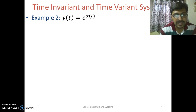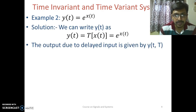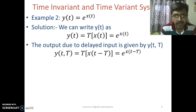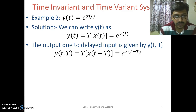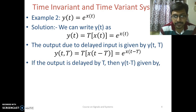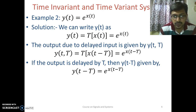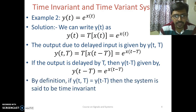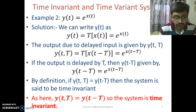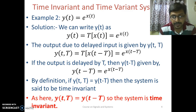Now consider another example where y(t) = e^(x(t)). We obtain the output due to delayed input: y(t, T) = e^(x(t − T)). We have delayed the input and obtained the output. Now we delay the output by T and represent it as y(t − T) = e^(x(t − T)), replacing t with t − T. By definition, if y(t, T) equals y(t − T), the system is time invariant. Here we can see that y(t, T) is equal to y(t − T), so the system is time invariant.